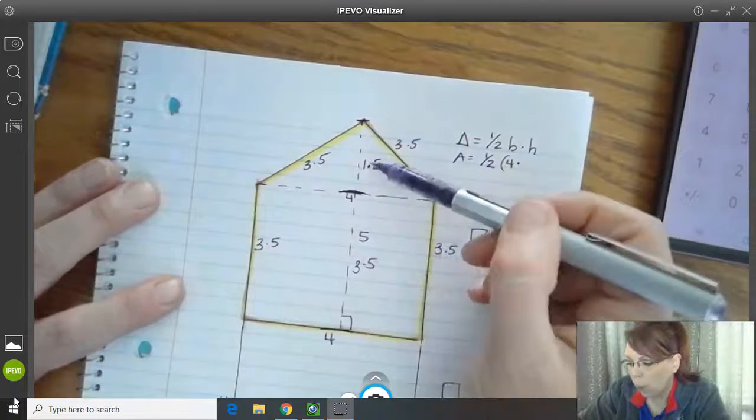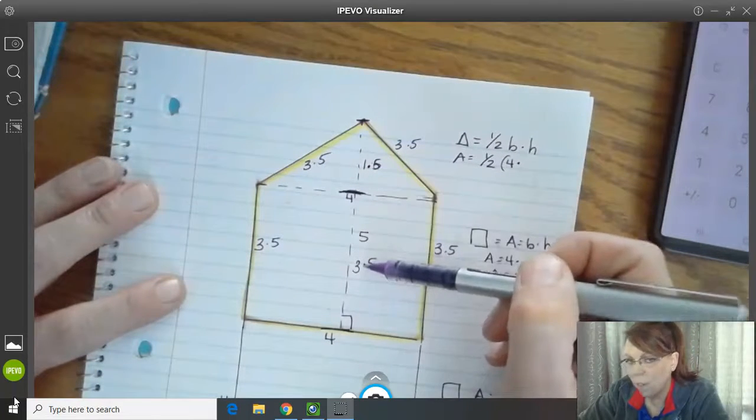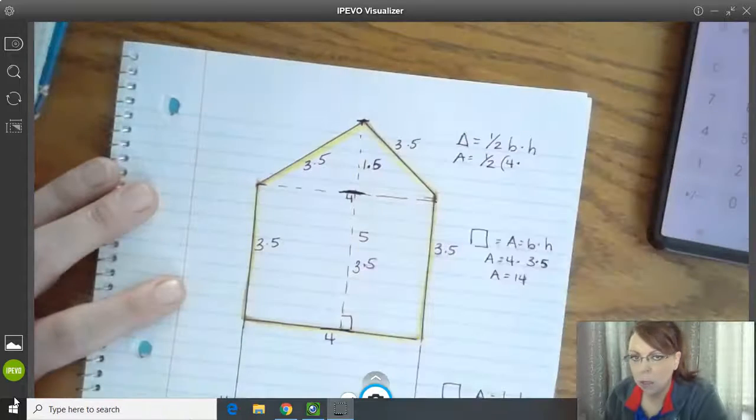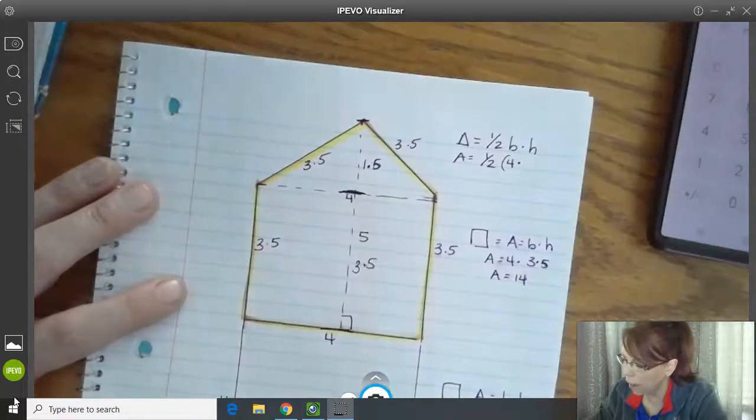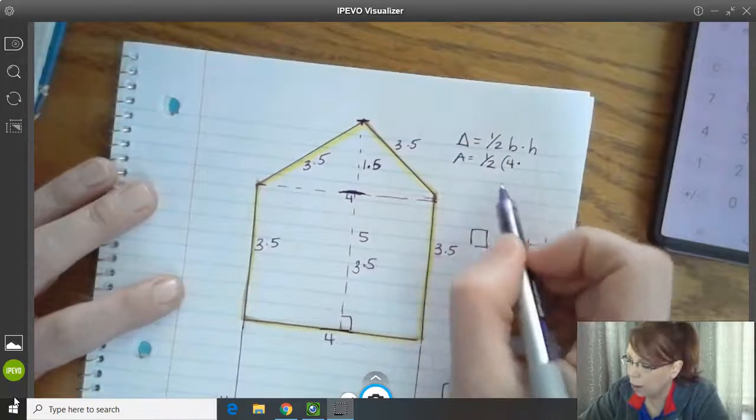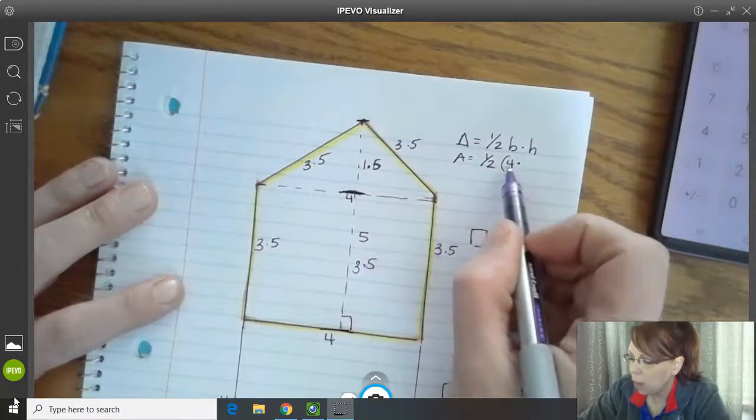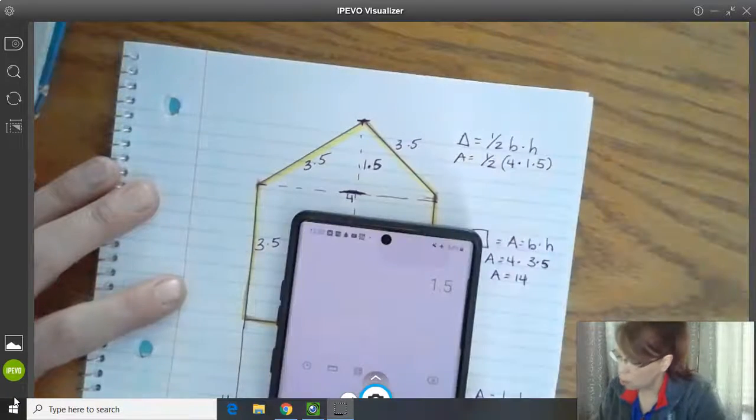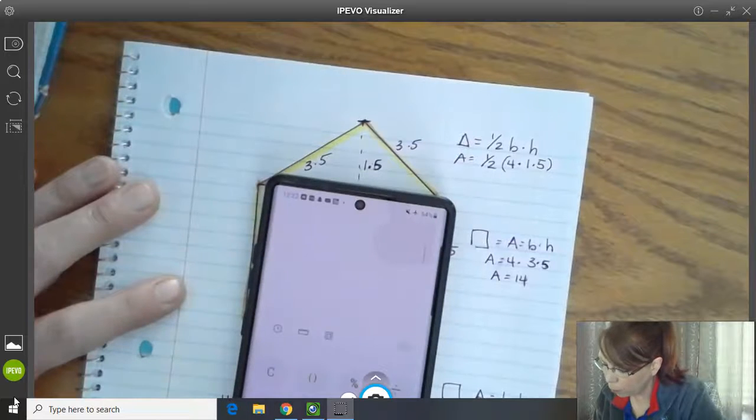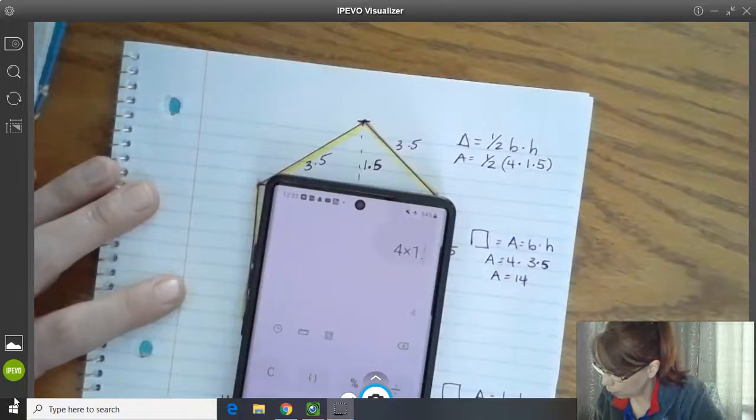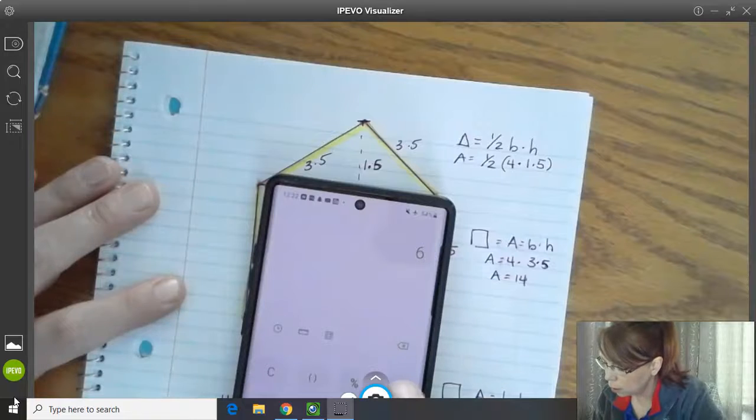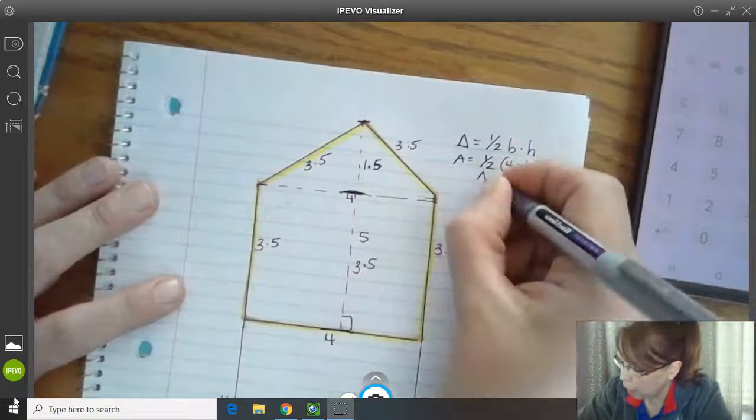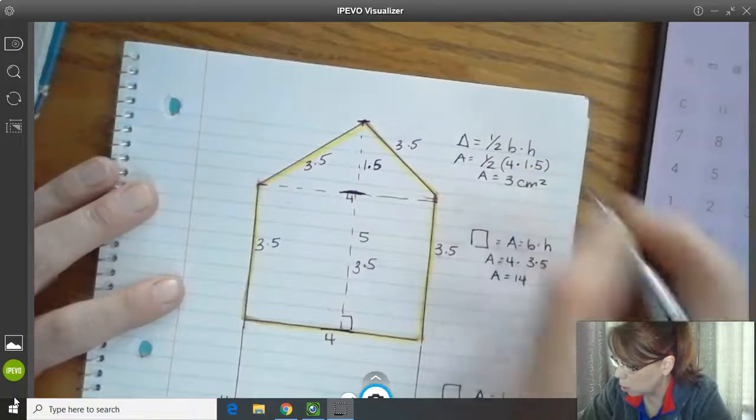So just to recap, 1.5 plus 3.5 equals five. And that's what it told us the height was from the base to the point. So that's how we get our five. So to continue this with the area of the triangle, we have half of the base, which is four times the height, which is 1.5. So we can go ahead and put that in our calculator. We can do four times 1.5 equals six divided by two because we only want half of it, three. So the area equals three centimeters squared.